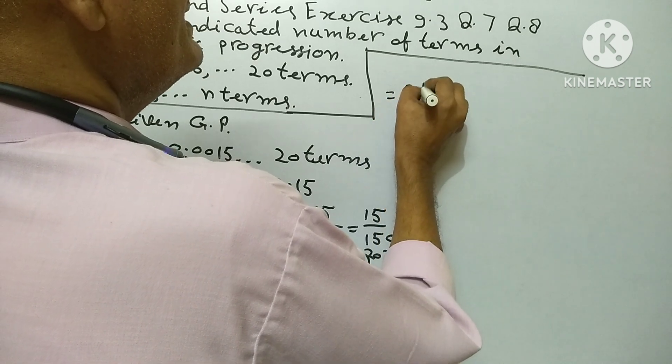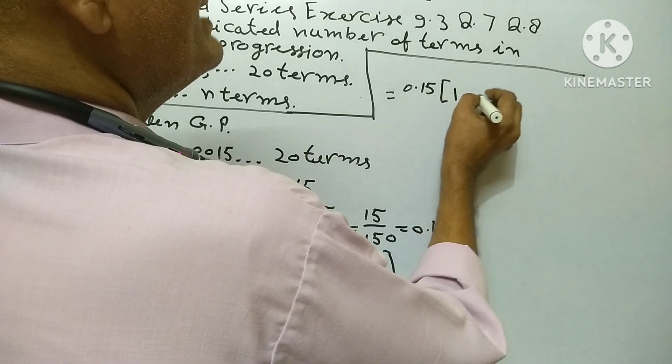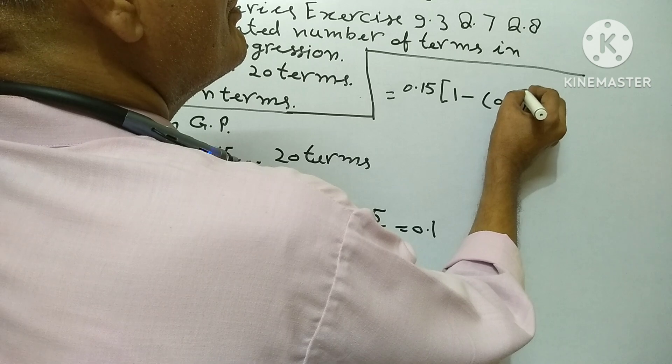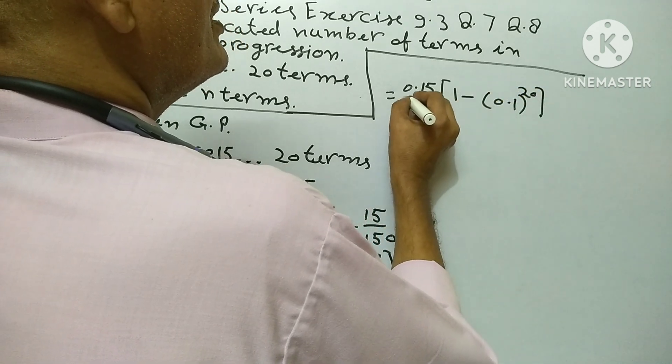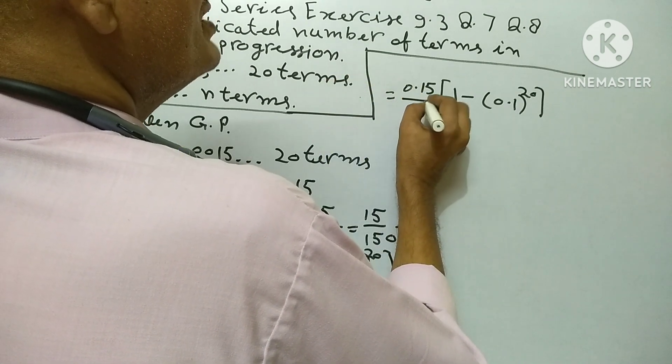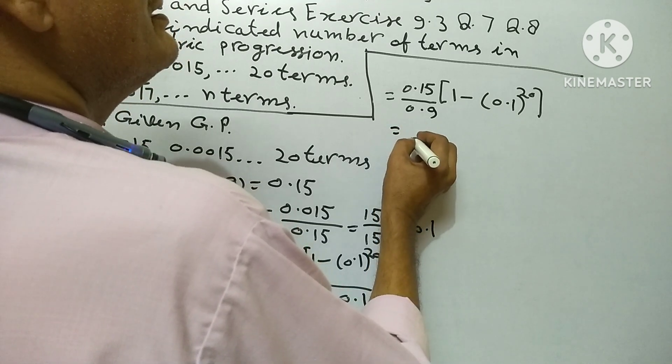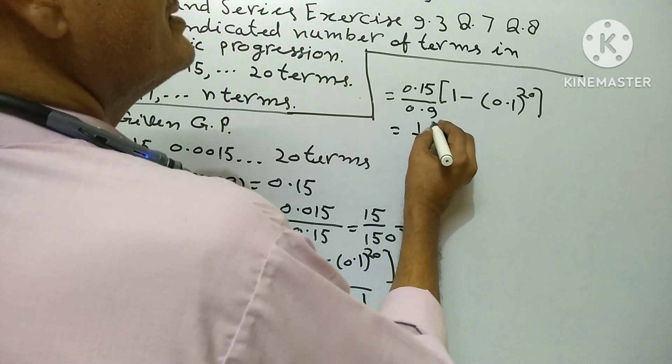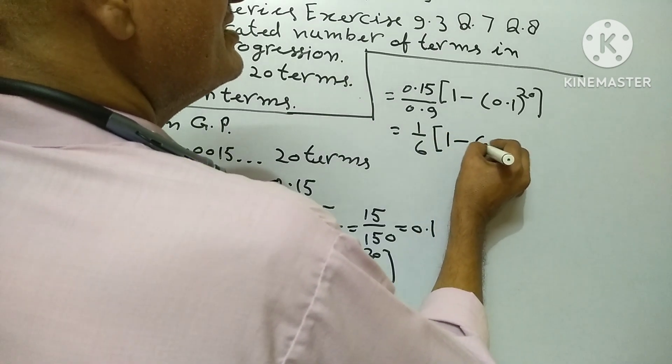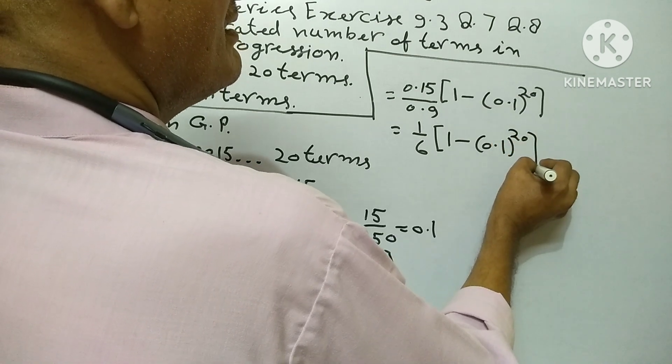Equals 0.15 into 1 minus 0.1 to the power 20 upon 0.9. This is the solution.